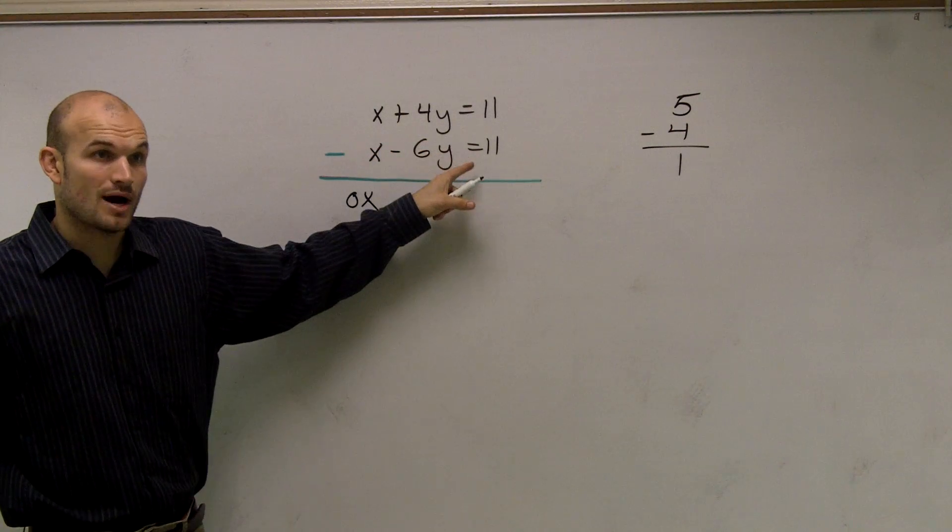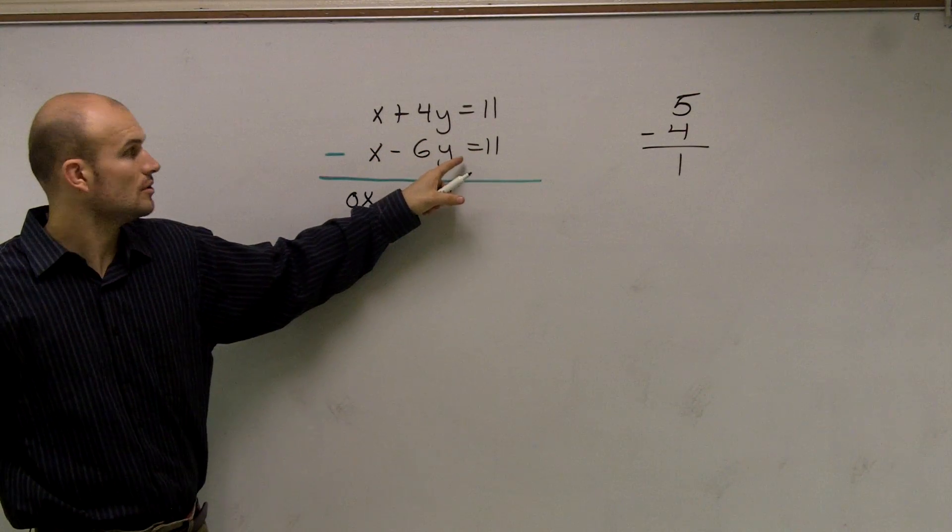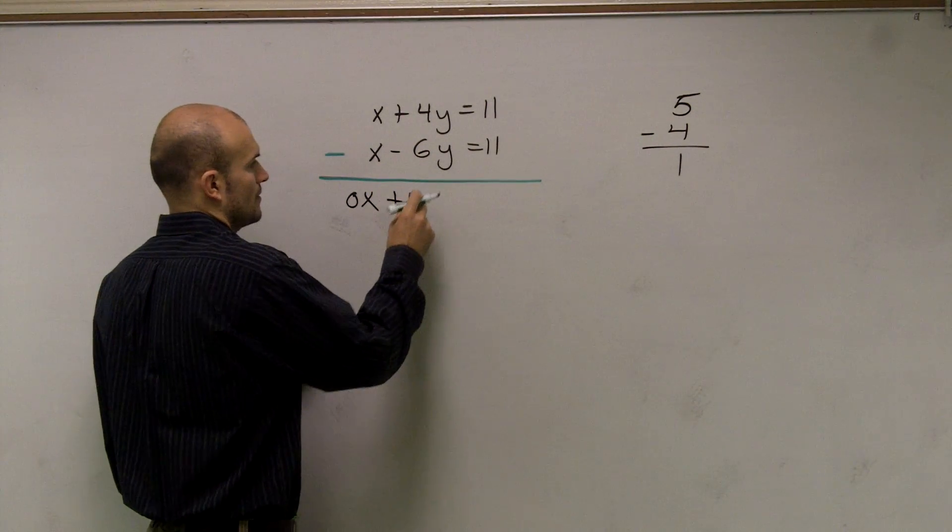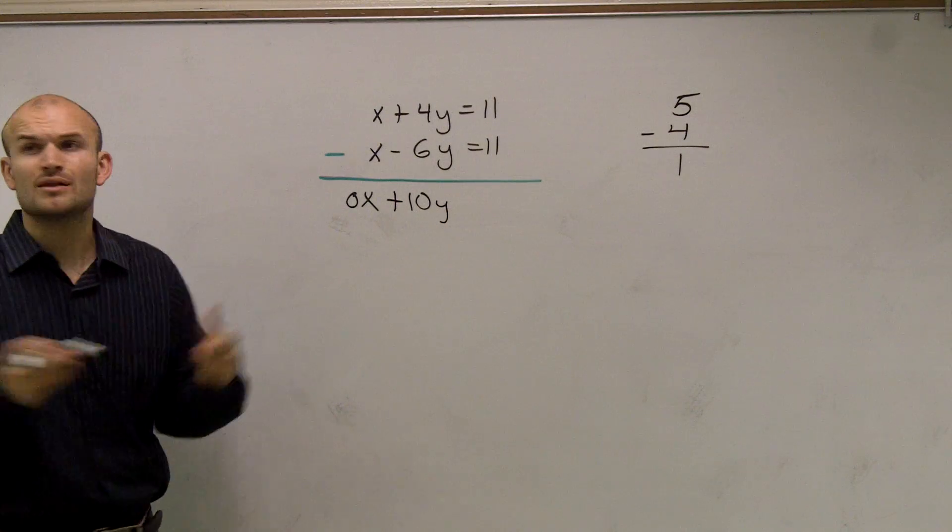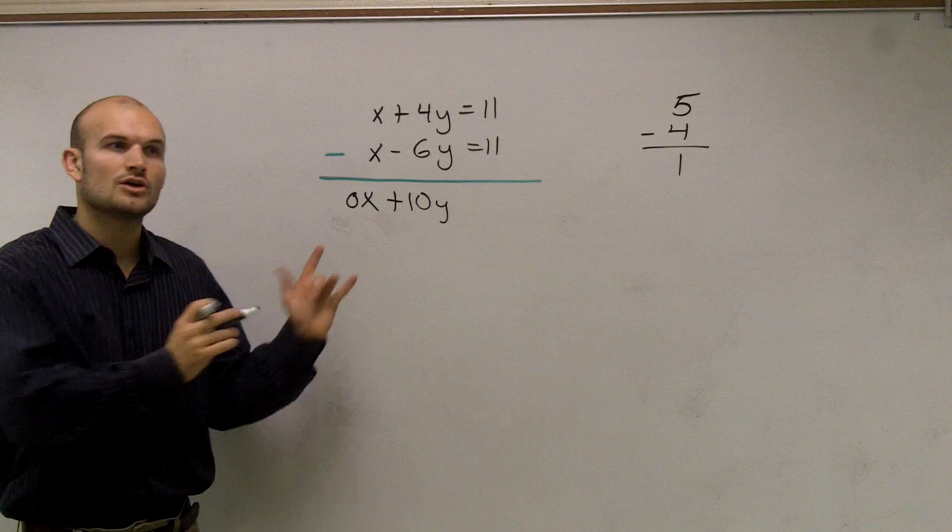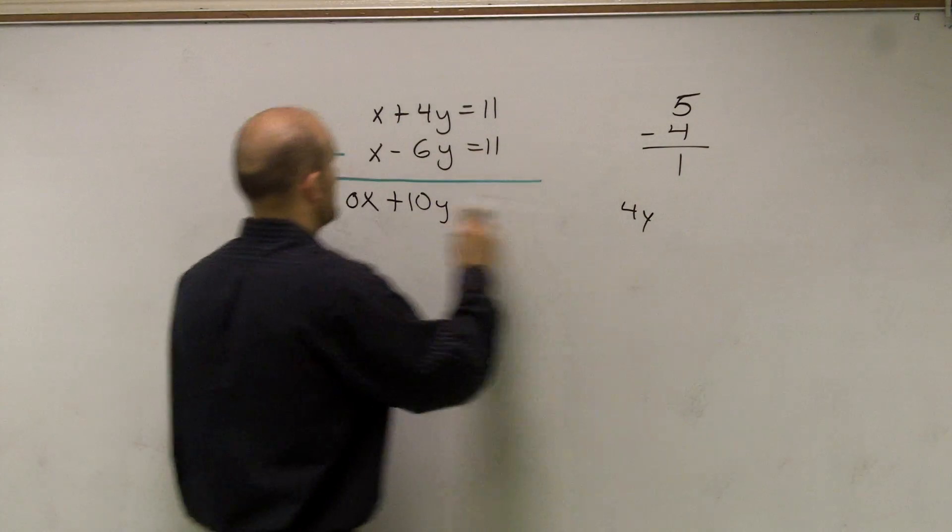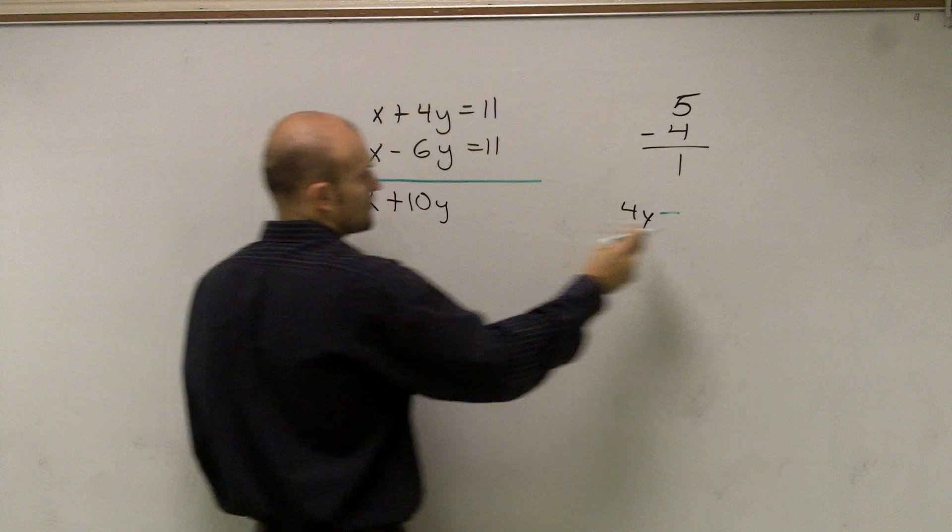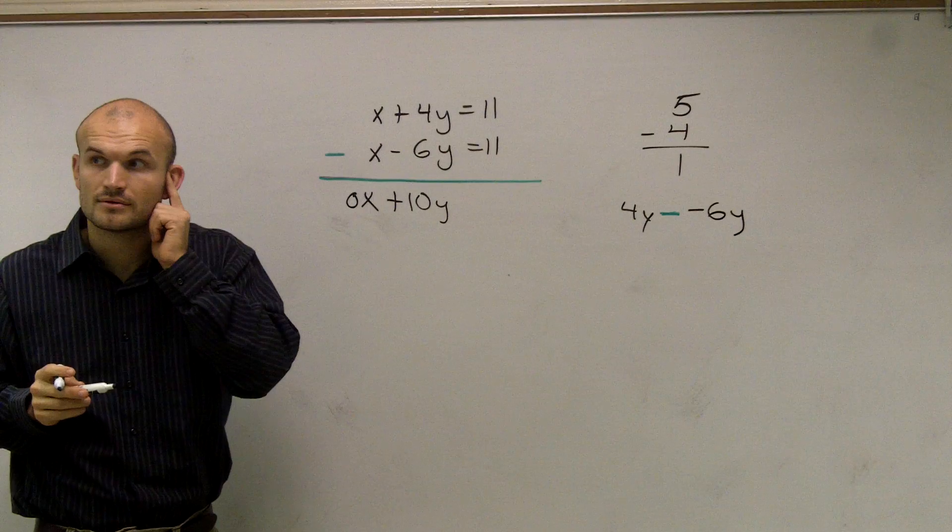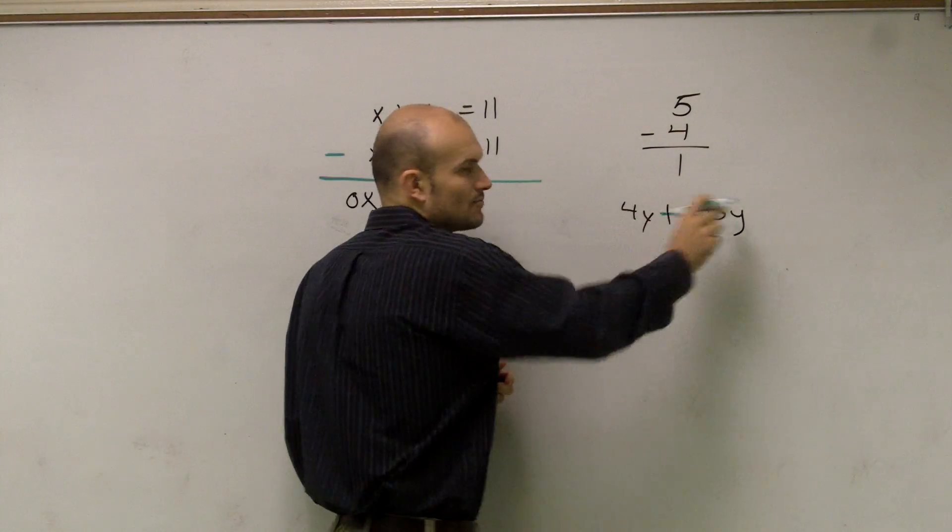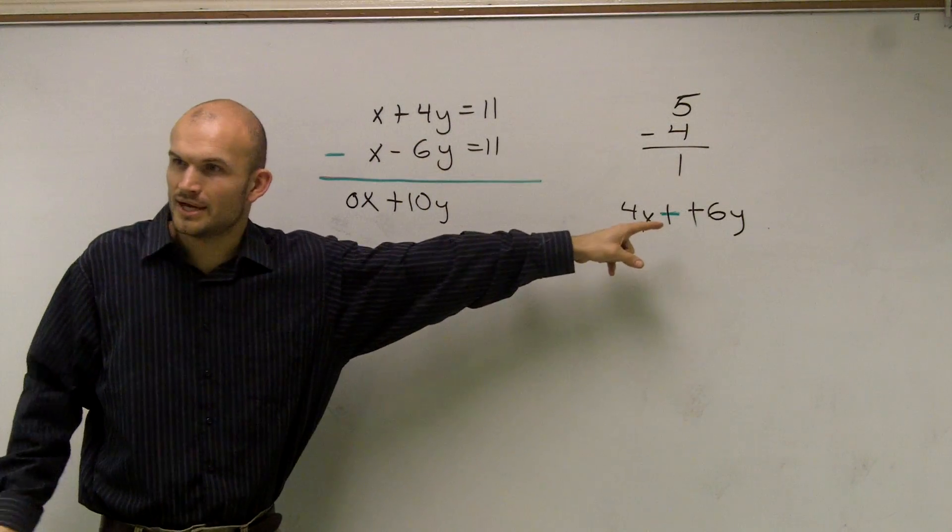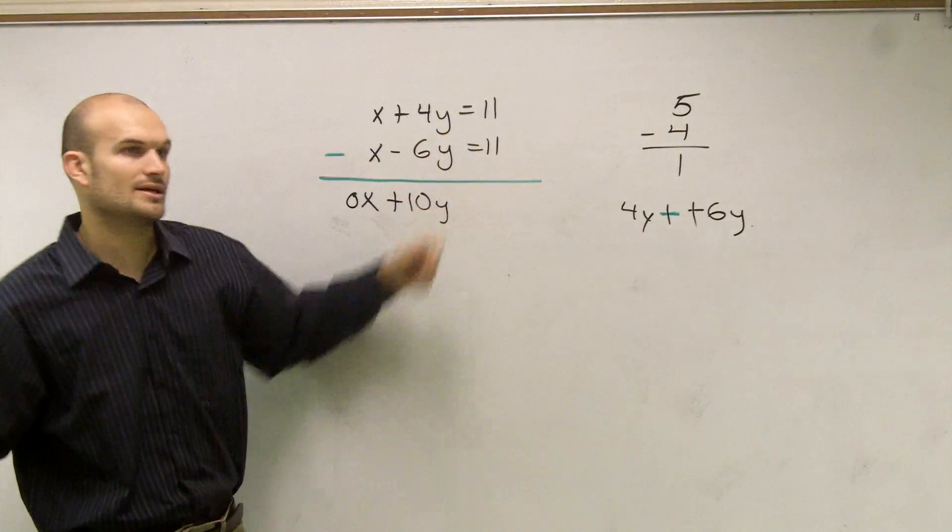4y minus 6y, hold on guys, 4y minus 6y is going to equal a positive 10y. You might say, Mr. Logan, how does that work? Well, if you get caught up with it, write it out. 4y minus 6y, a negative 6y. Remember, what happens when we have a double negative? It turns into a positive, right? That's where I got 10y. So if you're getting mixed up, just write it out. It's fine.